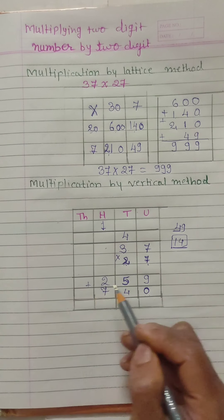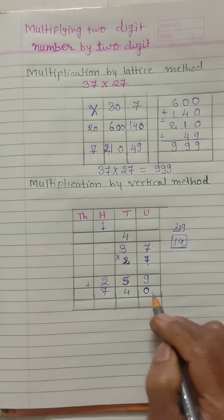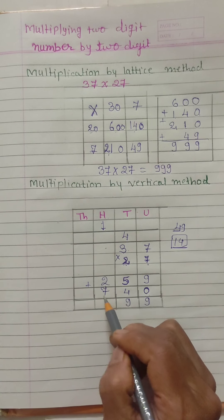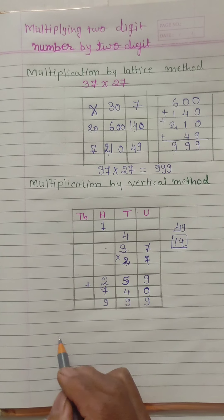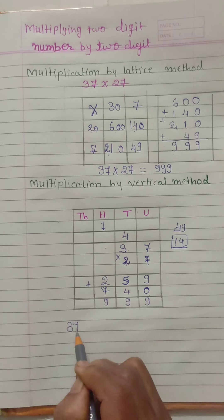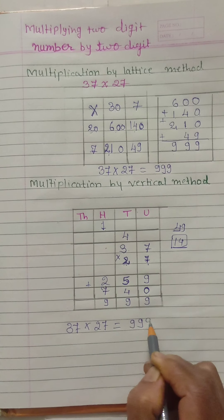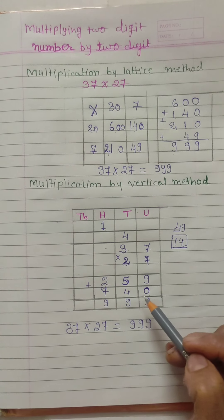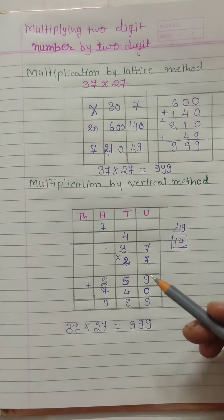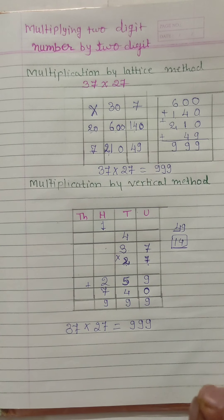Now we will add both the products. 9 plus 0 is 9. 5 plus 4 is 9. 2 plus 7 is also 9. So our answer is 999. 37 multiplied by 27 equals 999. In this method we are adding only 2 numbers, and our multiplication is not very big either.